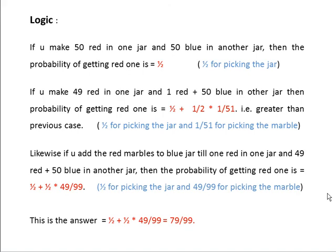Likewise, if you add all the 49 red marbles into the blue jar, then the probability will be even higher. That is 1/2 plus 1/2 times 49/99.